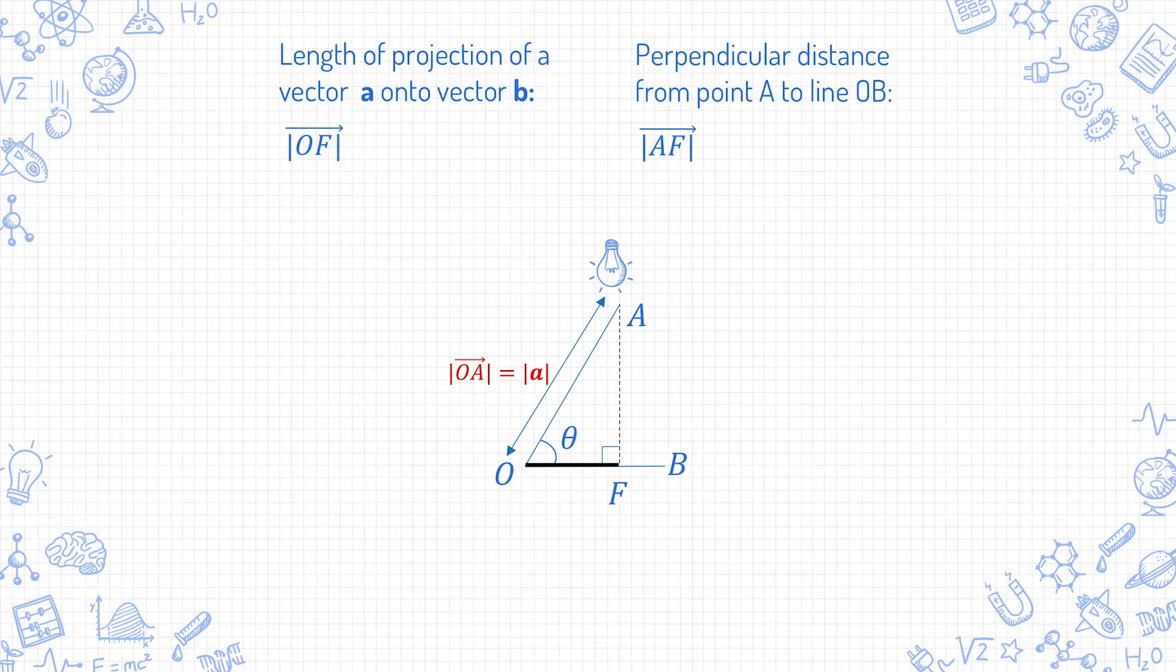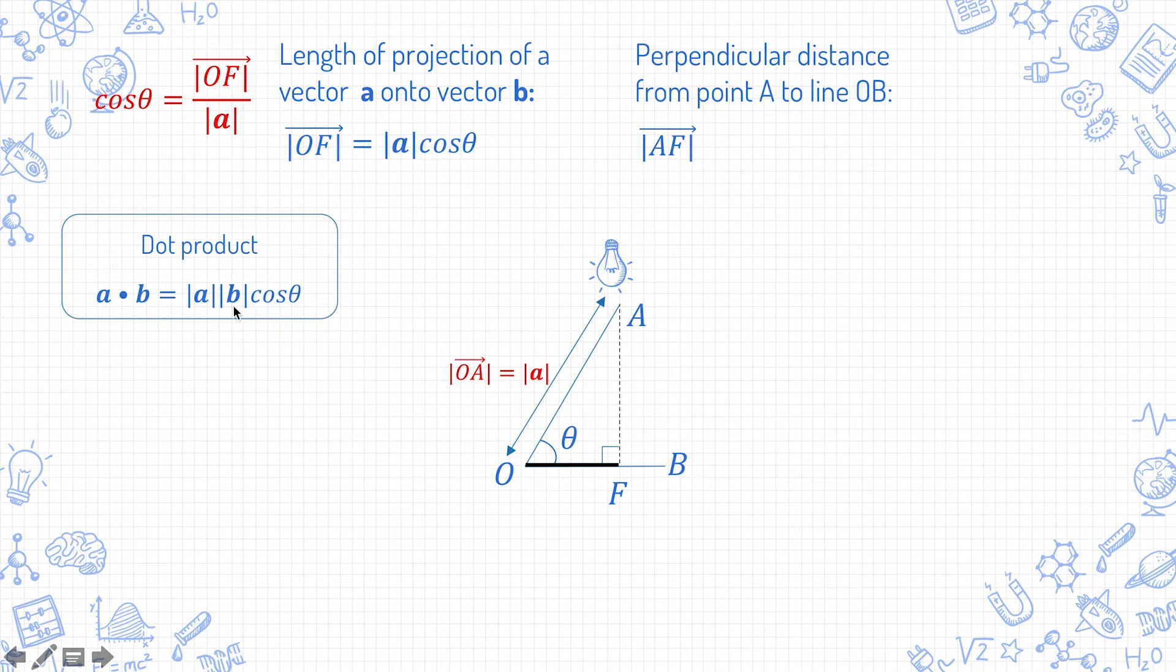Then AF is very simply the perpendicular distance between the point A and the line OB. Looking at the triangle OAF, cos theta equals to mod OF over mod of OA, which can be rearranged to mod OF equals to mod a cos theta.